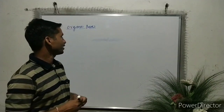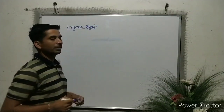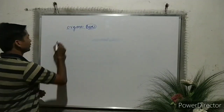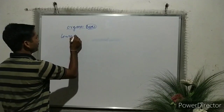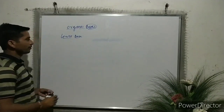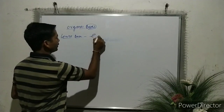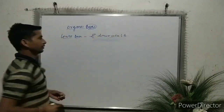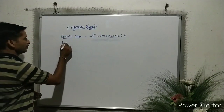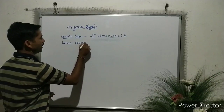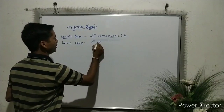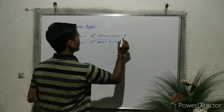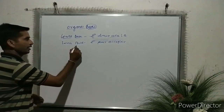As we know, bases are electron pair donors according to Lewis theory. An electron pair donor is called a Lewis base, and an electron pair acceptor is called a Lewis acid.